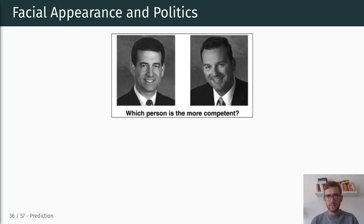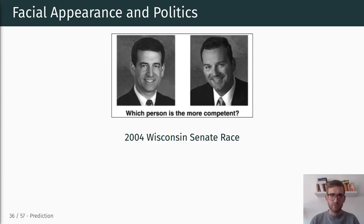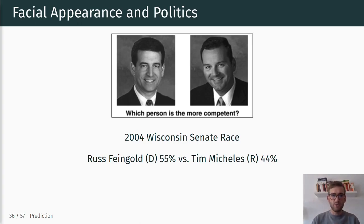If you look at this specific example, you might say you find one person looks more competent than the other. This specific example is actually from the 2004 Wisconsin Senate race. The person on the left is Ross Feingold, who won with 55% of the vote, and Tim Michaelis lost with 44% of the vote.